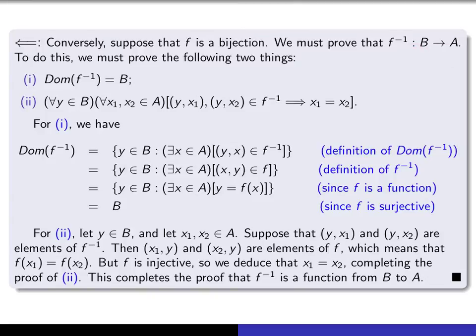The working definition of the statement that f inverse is a function from B to A requires two things: it must be the case that the domain of f inverse is all of B, and given any point in that domain, if yx1 and yx2 are both elements of f inverse, then x1 equals x2 — in other words, given a first element y, there can be only one image of that.